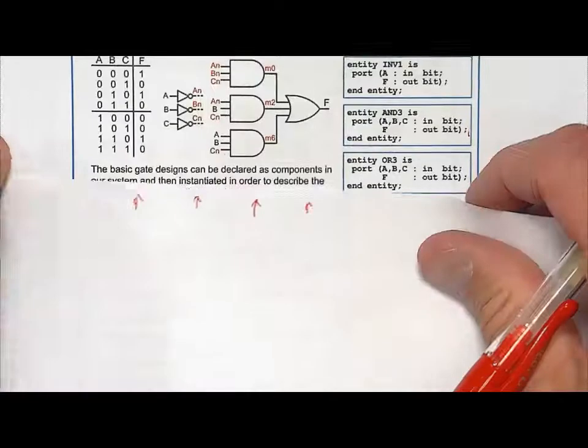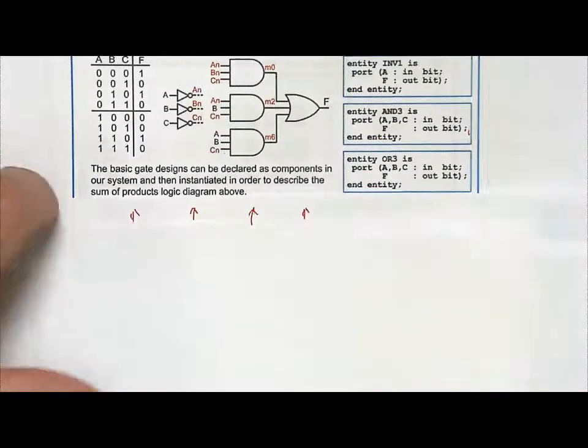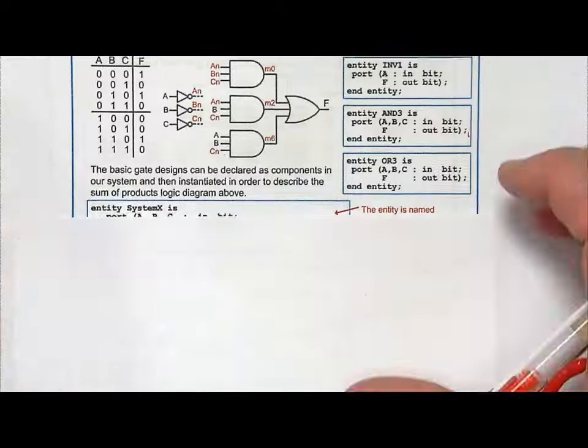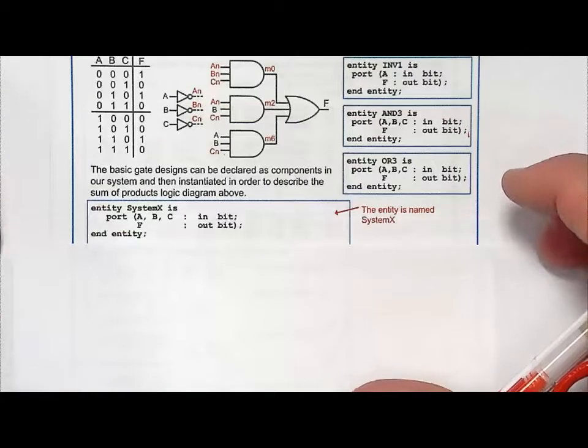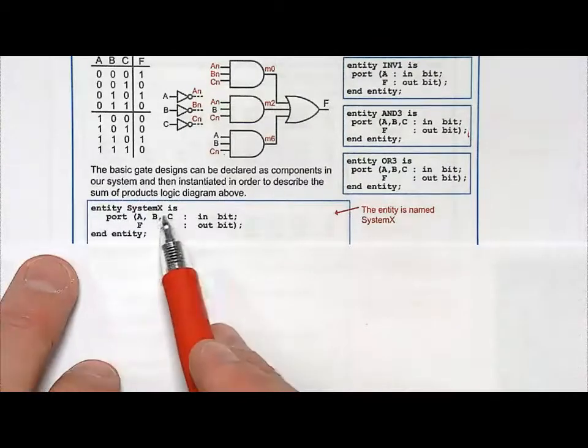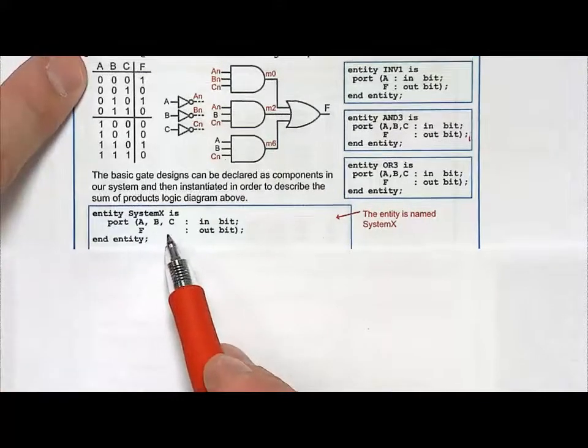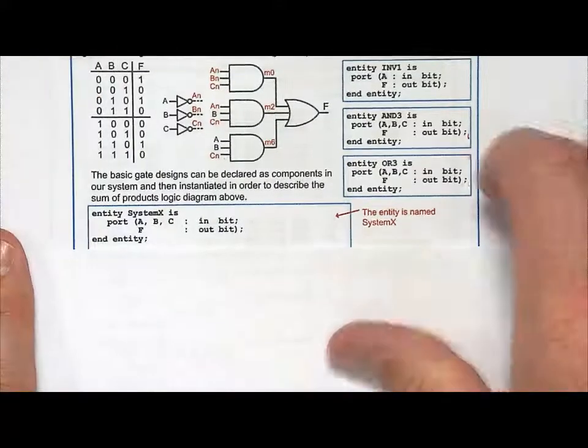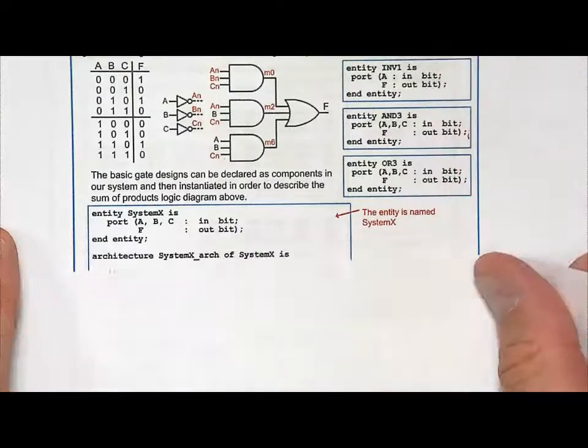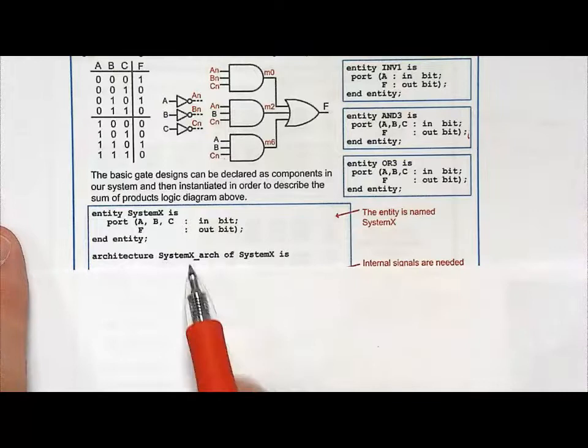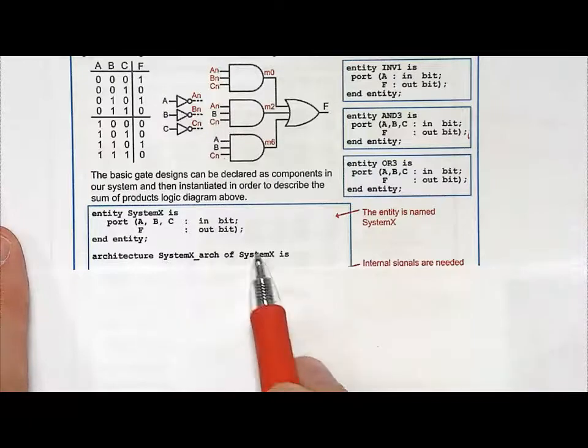So let's take a look at how this goes. So the first thing that we want to do is let's create the entity for our system, and let's just call it SystemX. So we come along, Entity, SystemX, ABC, and F, and we're creating this truth table right here. Now what we're going to do is we start the architecture. Architecture, SystemX, Arc of SystemX. Notice this is, I just made that up, this is tying it to that entity.